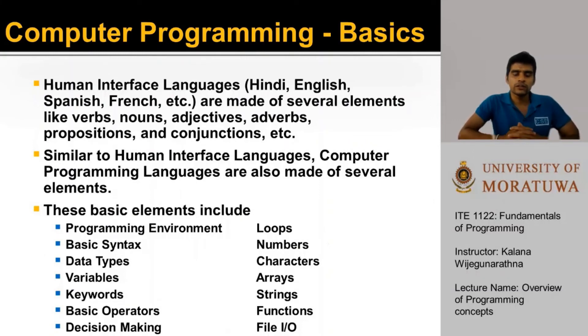We earlier spoke about computer programming languages, and we also noticed how it is increasingly becoming similar to human languages. But just like human interface languages, such as Hindi, English, Spanish, French, etc. are made of several elements like verbs, nouns, adjectives, adverbs, prepositions, and conjunctions, computer programming languages also are made up of elements like these. These basic elements include a programming environment, basic syntax, data types, variables, keywords, basic operators, decision making, loops, numbers, characters, arrays, strings, functions, and file input and output.